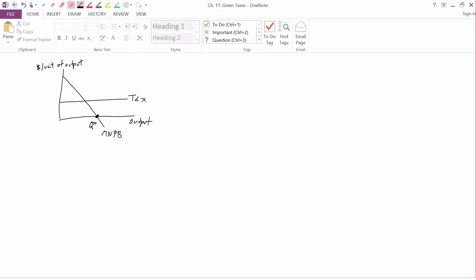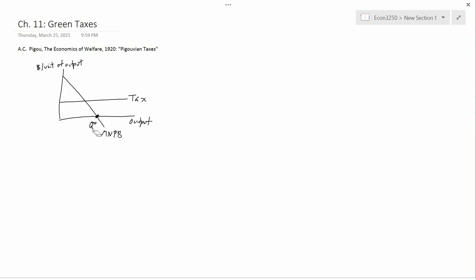I'm going to change the way I draw the Q to lowercase just to make sure that it's clear that this is just one firm. Sometimes they use lowercase q for one firm and capital Q for the entire industry. The firm isn't going to stay at QPY now, because what the firm is going to be interested in is marginal net private benefit minus the tax, which is essentially an extra marginal cost.